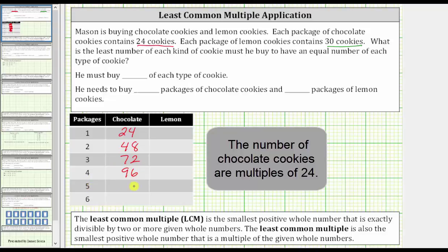If he buys five packages, there are five times 24, or 120 chocolate cookies. And if he buys six packages, there are six times 24, or 144 chocolate cookies.